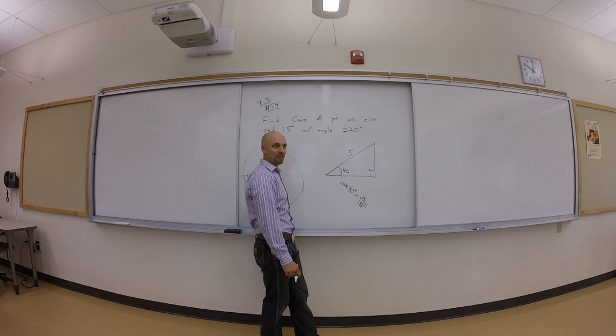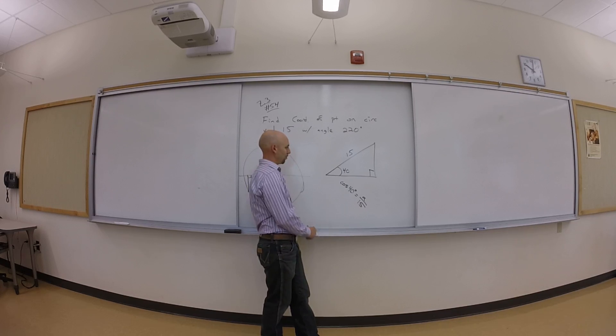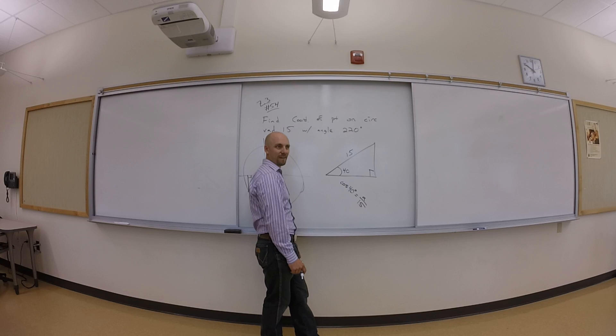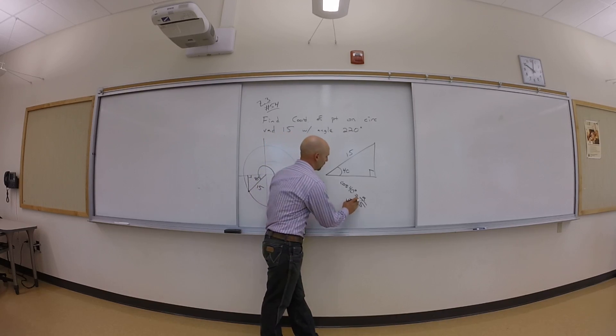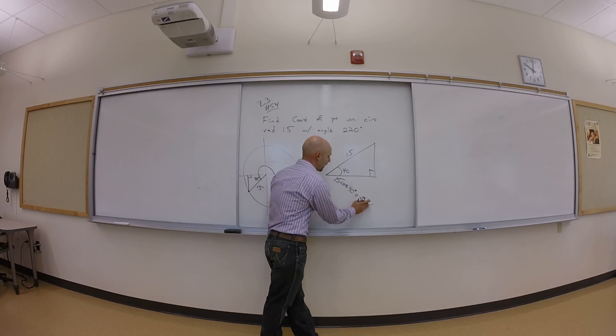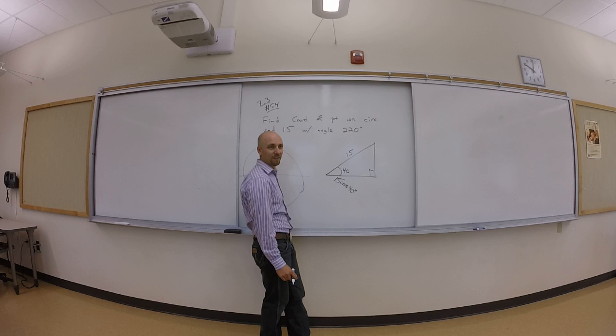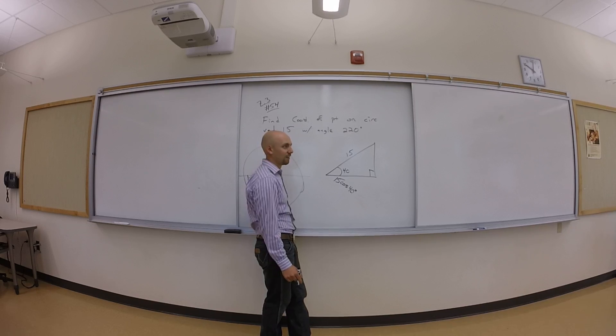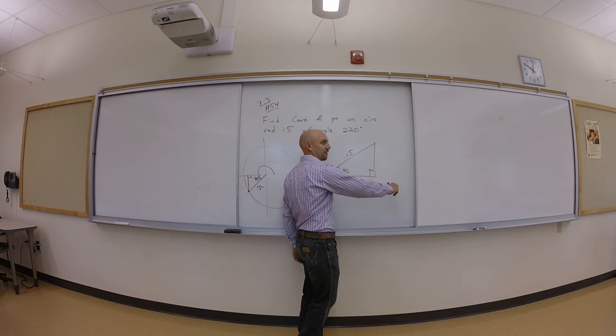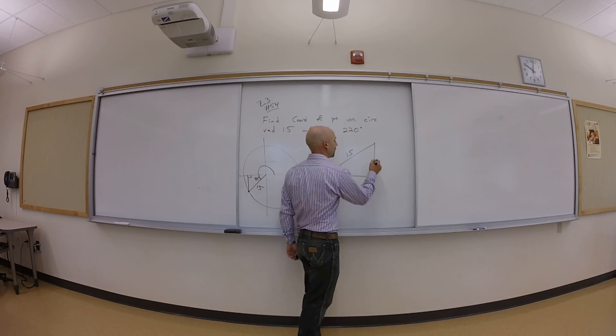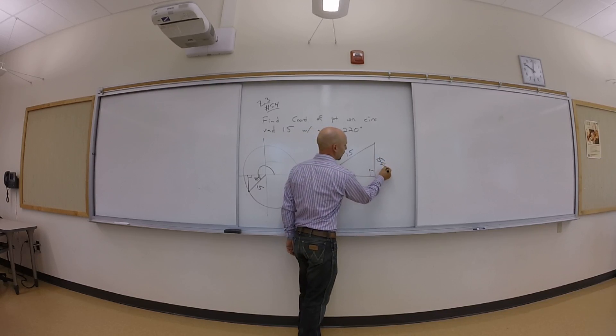Okay. So if I want A, right, what do I need? I need to multiply both sides by 15? Okay. So that side is 15 cosine of 40 degrees. And the other one is going to be 15 sine of 40 degrees.